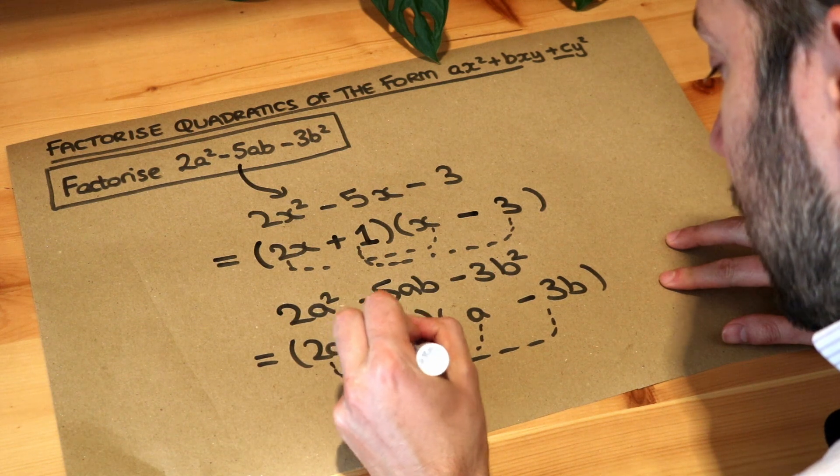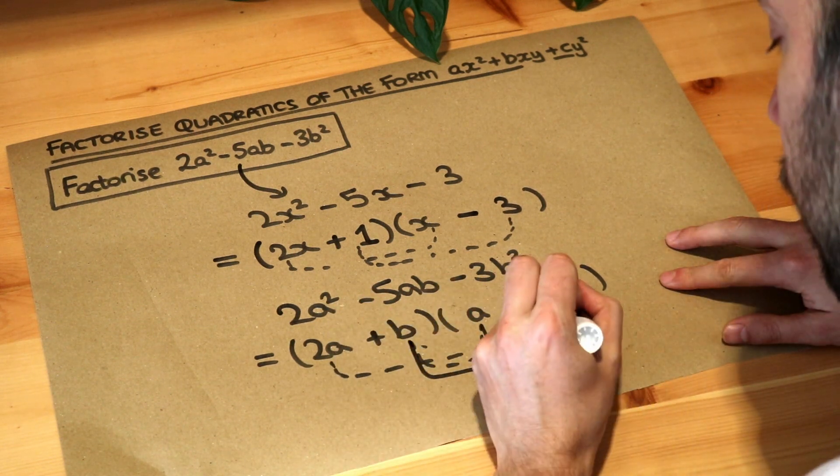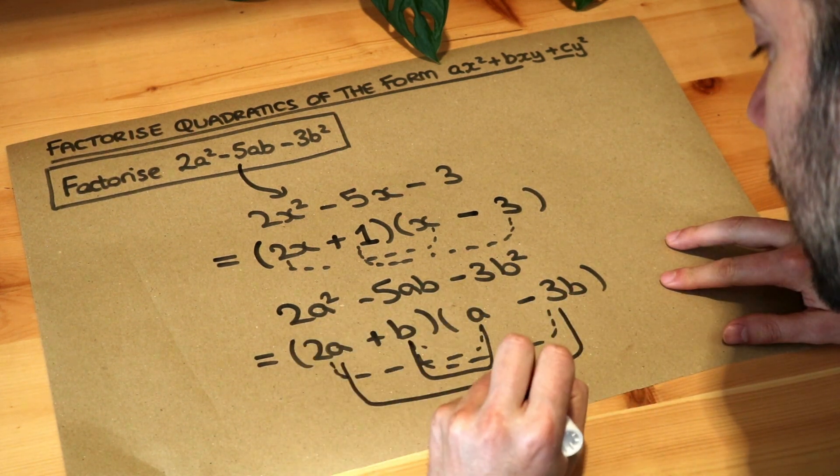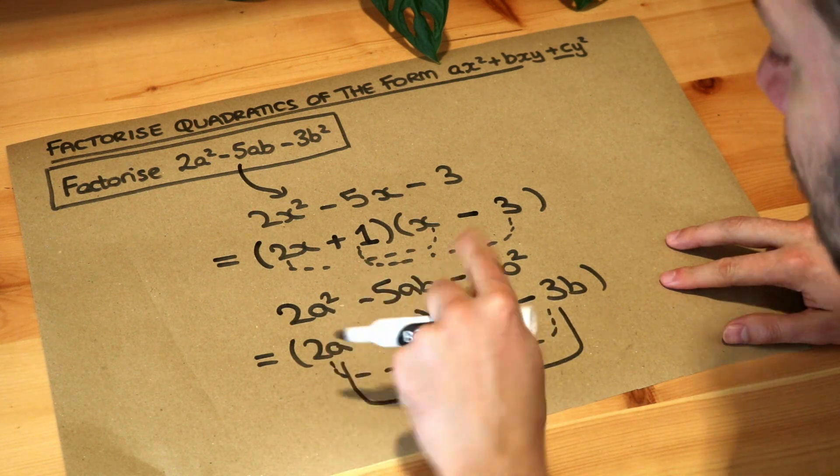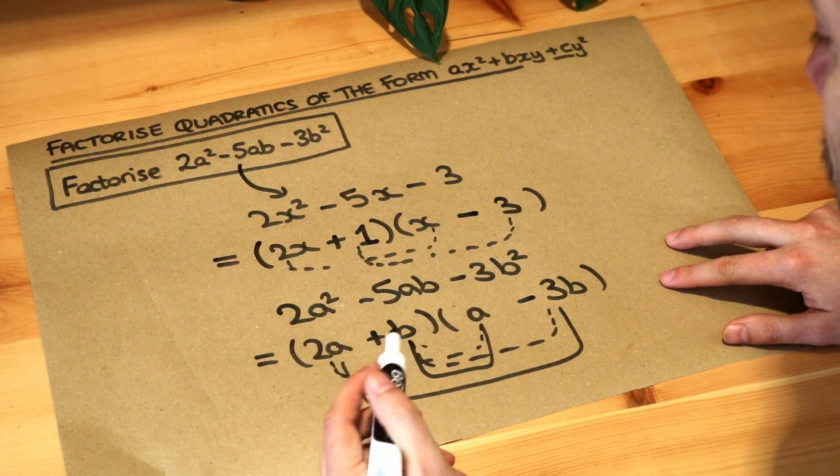So you can see we're going to get b times a which is ab, we're also going to get minus 6ab. Ab minus 6ab will be minus 5ab, so it works.